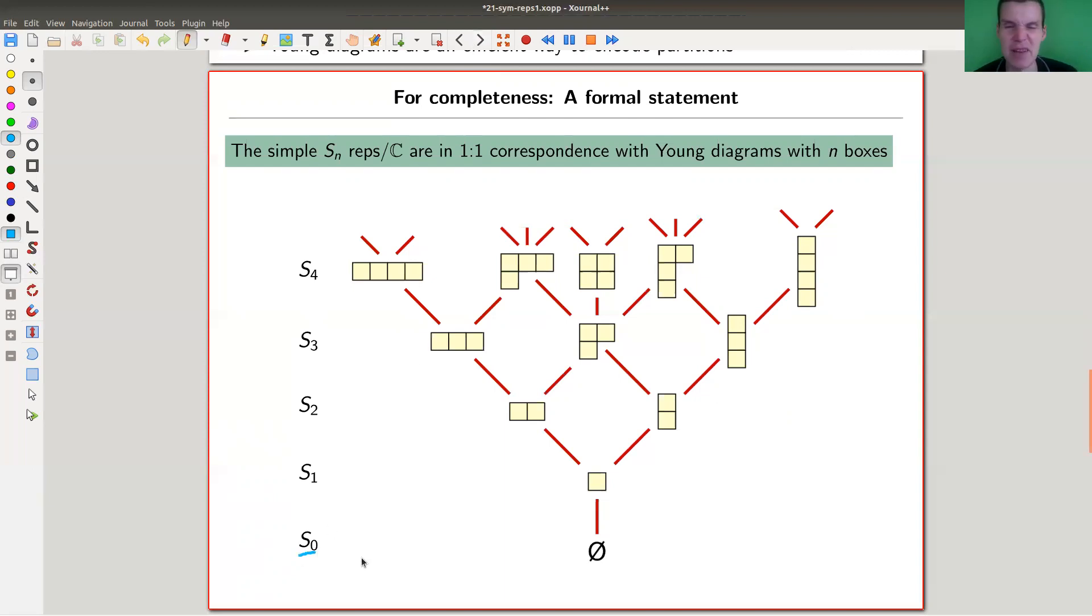again, over some nice field, are in one-to-one correspondence with Young diagrams with a corresponding number of boxes. So S_0, which is a little bit of a boring group, corresponds to no diagram. We can ignore that. But anyway, S_0 corresponds to no diagram. S_1 is one box.